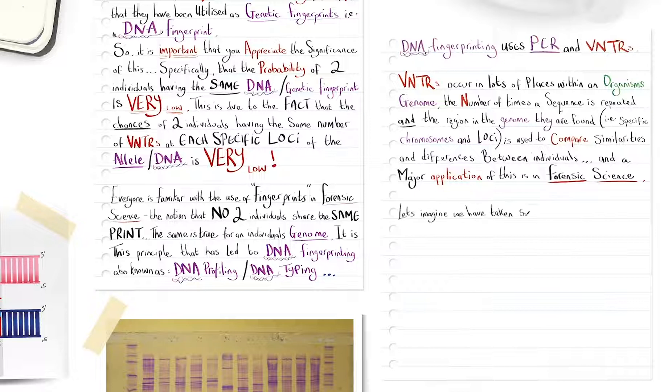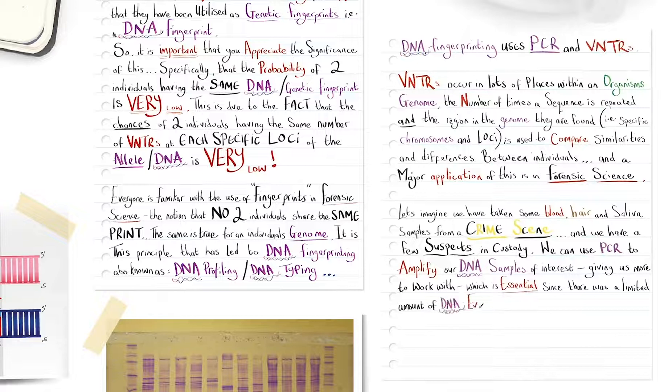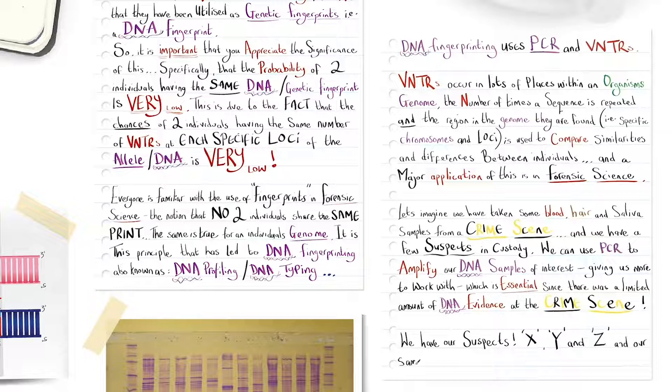Let's imagine we have taken some blood, hair, saliva samples from a crime scene, and we have a few suspects in custody. We can use PCR to amplify our DNA samples of interest, giving us more to work with, which is essential since there was a limited amount of DNA evidence at the crime scene. And we have our suspects, X, Y, and Z. And our sample collected from the crime scene, which we'll label F.